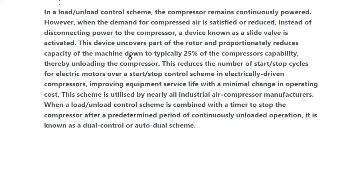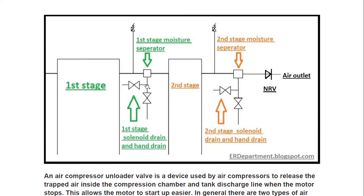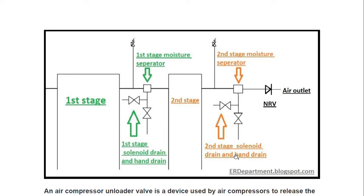In this video we are going to discuss about the unloader. This is a typical block diagram showing the first stage and the second stage. You have moisture separators, solenoid drain valves, and hand drain valves for both stages.